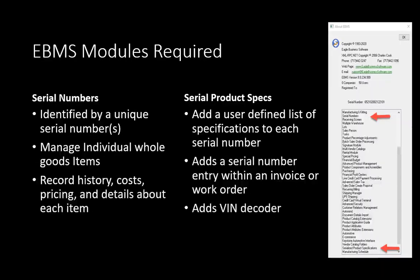The VIN decoder requires the following two EBMS modules and is included as part of the Serial Product Specs or Serial Numbers Specs module. The Serial Numbers module is used to identify unique serial numbers to manage individual whole goods and to record history, costs, pricing, and details about each serial number. The Serial Product Specs is an additional enhancement that adds the ability for the user to define a list of specifications to each serial number.